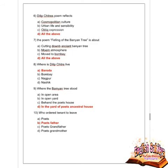Next question: where does Dilip Chitre live? Given options are Baroda, Bombay, Nagpur, and Nasik. Option A is correct — Baroda. Next question: where did the banyan tree stand? Options are in an open yard, in an open area, behind the poet's house, and in the yard of the poet's ancestral house. Option D is correct — in the yard of the poet's ancestral house.